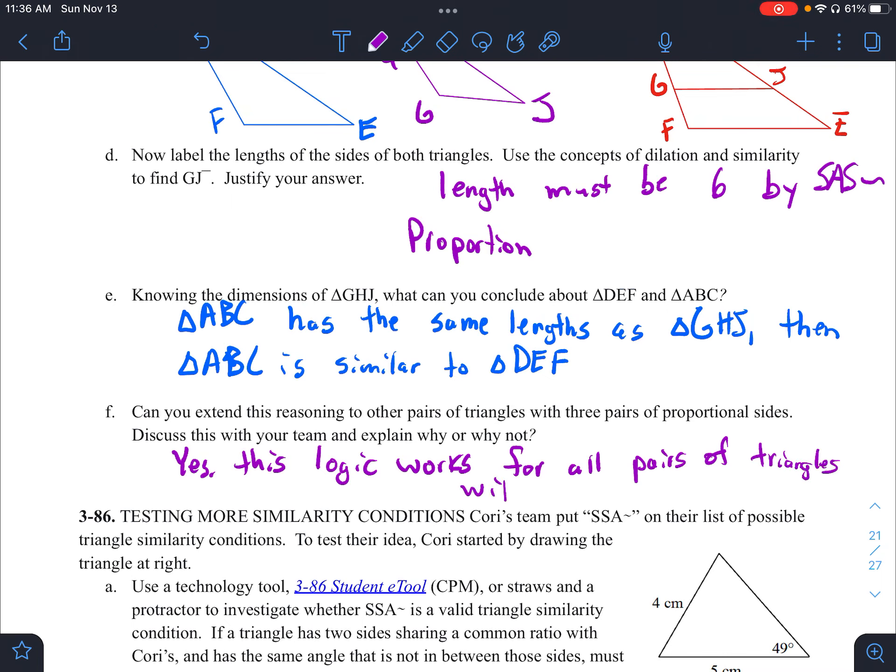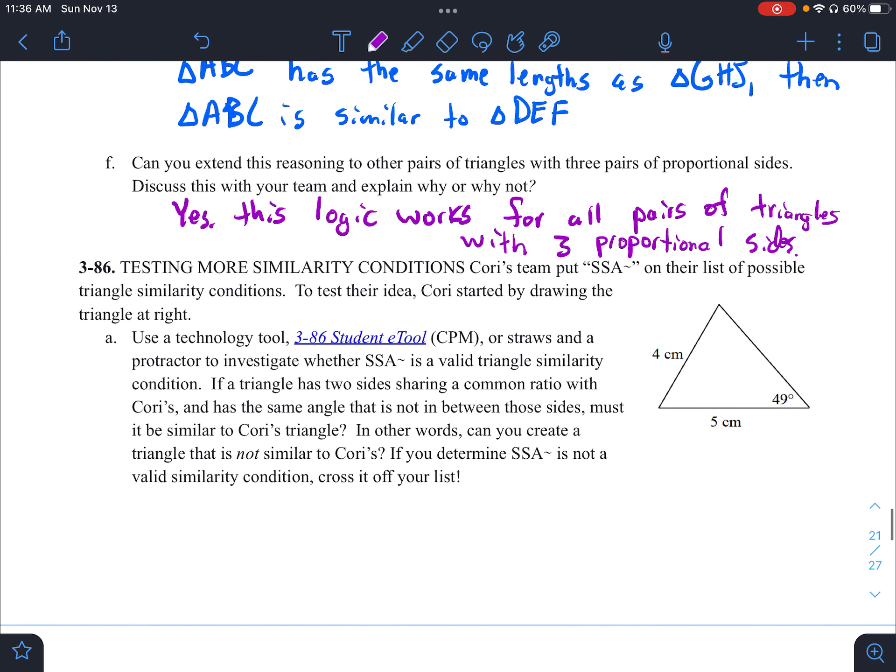So last one then that we are going to work with. And this one, you can use the E tool. I think is helpful here to help you with this. 86 says this Corey's team put side side angle on their list of possible triangle similarity conditions to test this idea. Corey started by drawing the triangle on the right. So give you a few minutes. Again, pause the video, look for, or try to solve A and B.